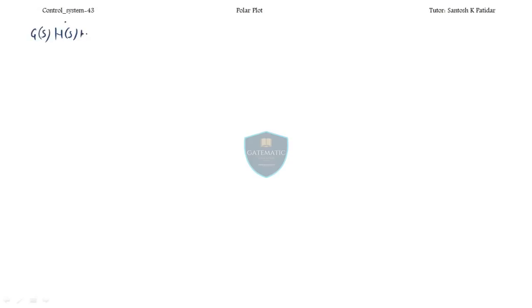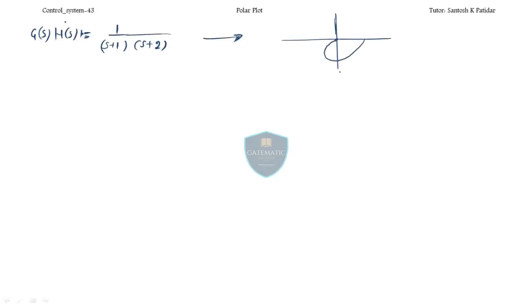The problem was G(s)H(s) equal to 1 over (s+1)(s+2). The plot of this was like this — it's cutting the axis at minus 90 degrees.